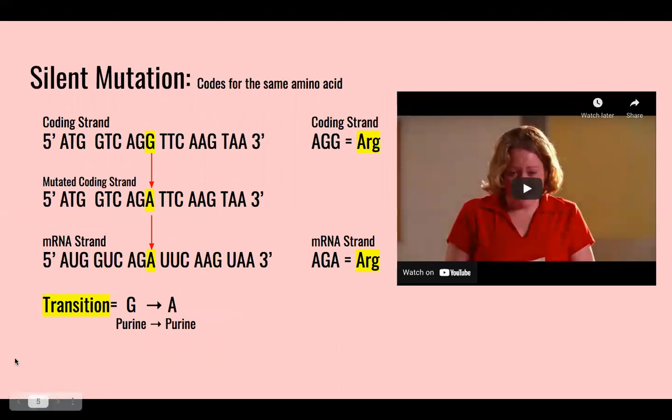Next, we have a silent mutation, which codes for the same amino acid. Seen here, even though the G is changed to A, it still codes for arginine. In Mean Girls, a student who doesn't even go to the school silently blends in with the other students at the school, that is, until she speaks up.